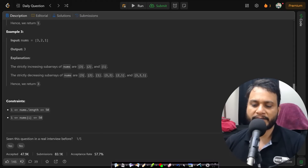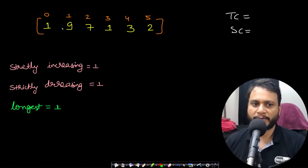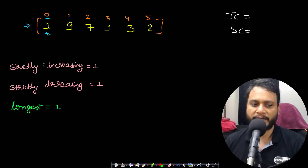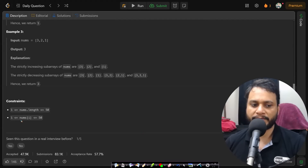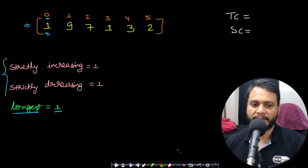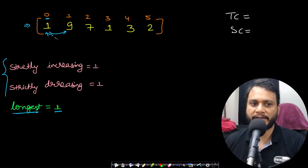Now let's look at the single-pass solution for this problem. We take the array starting from index 0 and initialize the longest strictly increasing and strictly decreasing subarray sizes to 1. As long as we see a strictly increasing value, we keep incrementing the strictly increasing counter; if we see a strictly decreasing value, we increment the strictly decreasing counter.